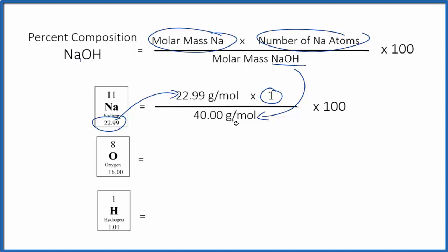So we multiply the top, divide by the bottom, and to get a percent, we multiply this by 100. We get 57.48%, and that's the percent composition by mass of the sodium in sodium hydroxide. Note that we have grams per mole on the top and the bottom. Those units cancel out, so we don't have any units over here.